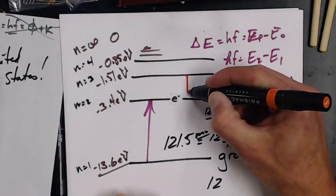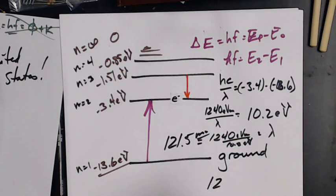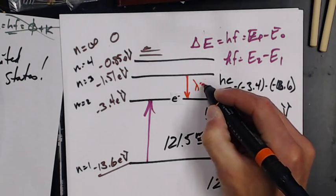So it's going to start here at n equals 3 and fall itself down to n equals 2. Again, what's the wavelength given off?